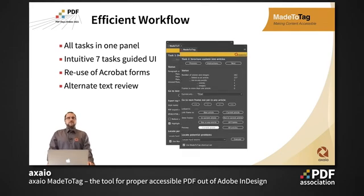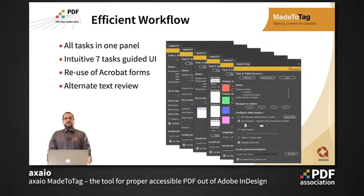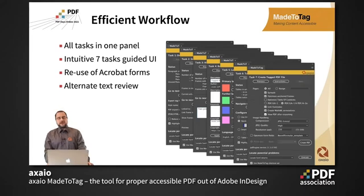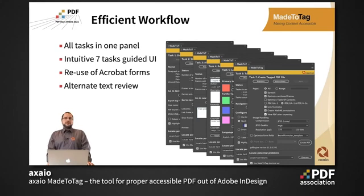We come with an intuitive seven-task guided UI, so you can go from one task to another and Me2Tag helps you do all the work you need. It also helps with keyboard shortcuts for a quick, efficient way to work. It will also help you reuse work — for example, if you're working with forms, form fields can be applied to the output PDF on each export, so you don't need to re-tag everything in Acrobat.